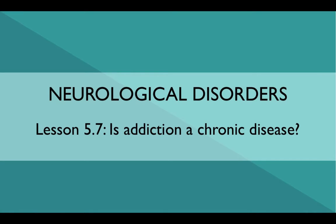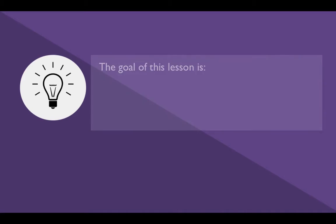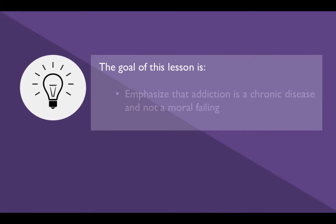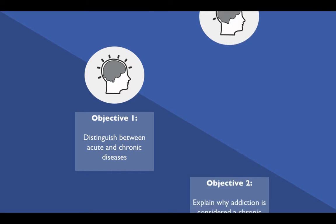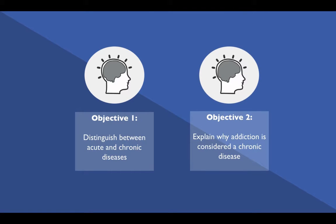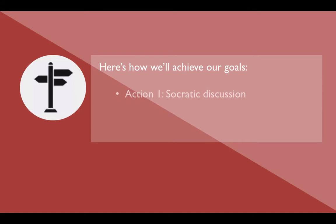Neurological Disorders Lesson 5.7: Is Addiction a Chronic Disease? The goal of this lesson is to emphasize that addiction is a chronic disease and not a moral failing. Students should be able to distinguish between acute and chronic diseases and explain why addiction is considered a chronic disease. We'll achieve these goals with a Socratic discussion and a jigsaw on chronic diseases.